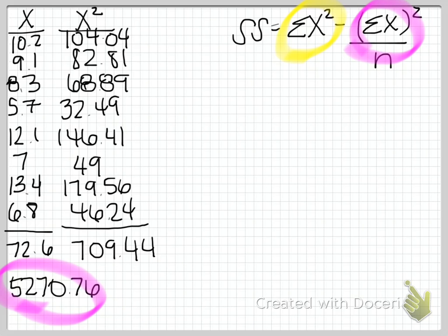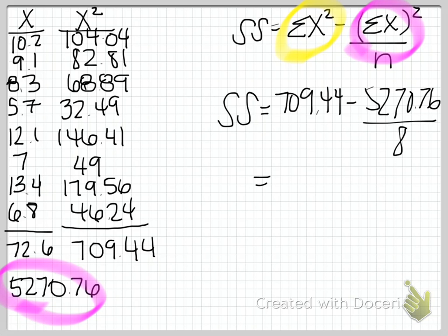So now to find our sum of squares, we simply plug in our numbers. So sum of squares equals our sum of x squared, which is 709.44, minus 5,270.76, my handwriting is getting atrocious, divided by the number in our sample. In this case, it's 8. So if we go ahead and plug that into the calculator, what we get is a sum of squares of 50.595. So our first step is done.